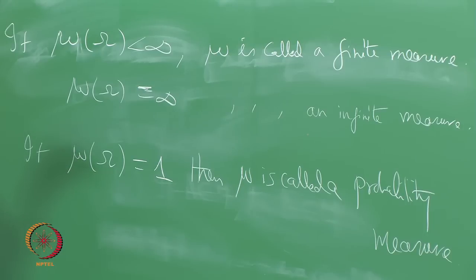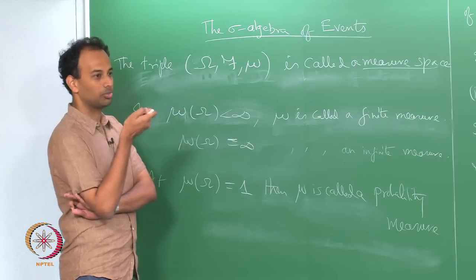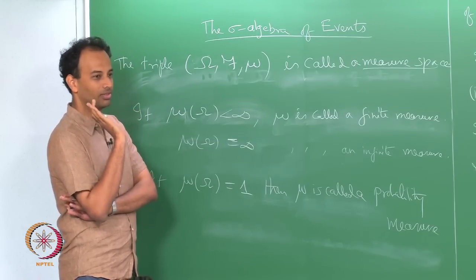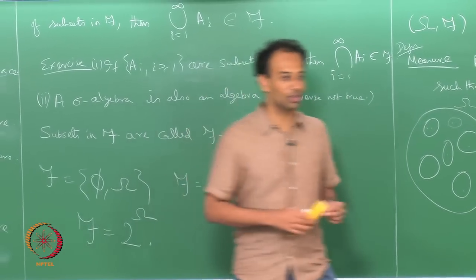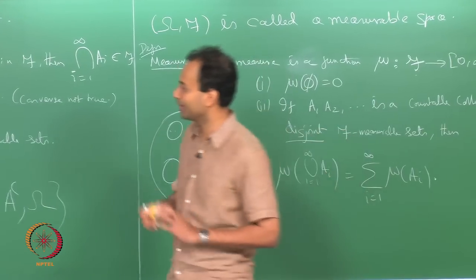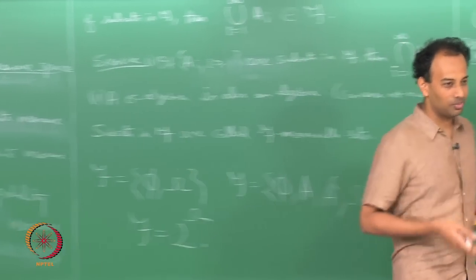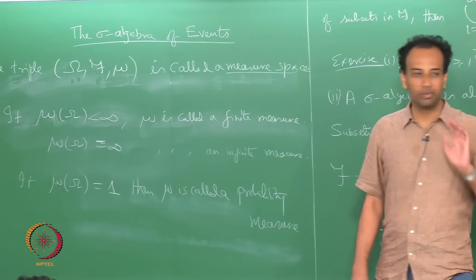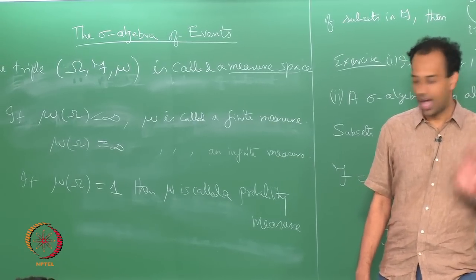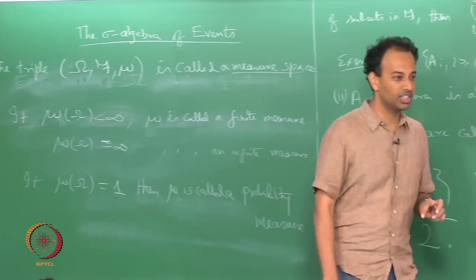A probability measure is a very special case of a measure — it is a finite measure which assigns 1 as the measure to the entire sample space. That is really all there is to it. In this sense probability theory is a special case of measure theory. Since this is a course on probability theory and not measure theory, when mu is a probability measure — when mu of omega equals 1 — we will no longer call it mu but call it P, and we call the triple (omega, F, P) a probability space.